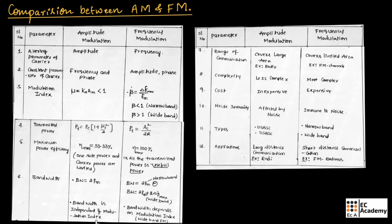The bandwidth of an AM signal is given as 2fm, and in AM the bandwidth is independent of modulation index. In frequency modulation, the bandwidth for narrowband FM is 2fm, and for wideband FM the bandwidth is 2fm plus 2 delta f maximum. In FM, the bandwidth depends on the modulation index.